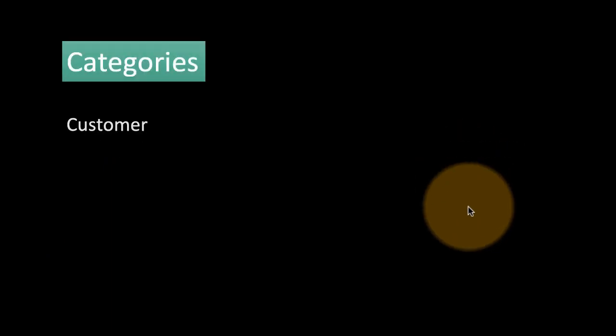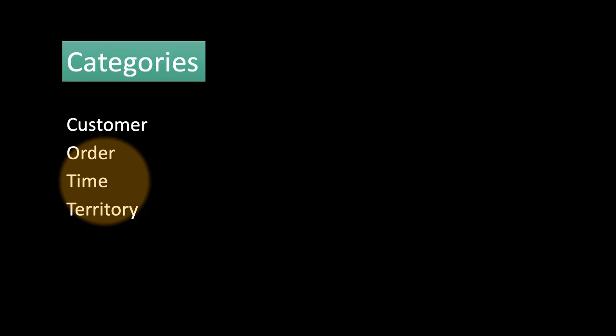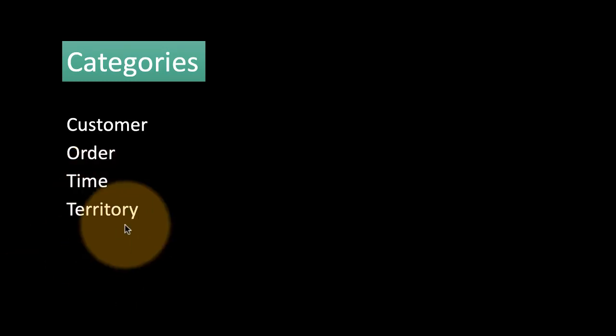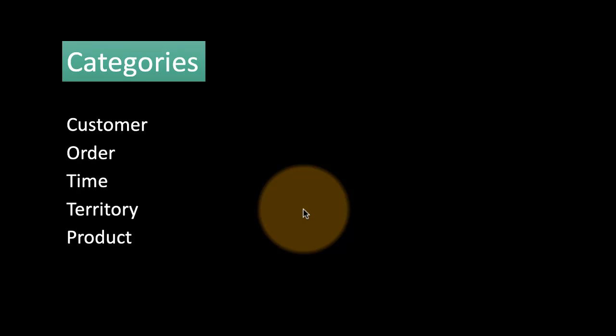Let's see some examples of categories and measures. Categories would be things like customer name or customer ID, or a particular order — an order number is not a numeric thing, it's just a category. Similarly, time is also a category: what are the sales that happened on a particular day, so in that sense time is a category. Territory is a category — Northeast, Southwest, or however an organization assigns territories. Product is a category — we may talk about sales or profit from a particular product. Warehouse is also a category.